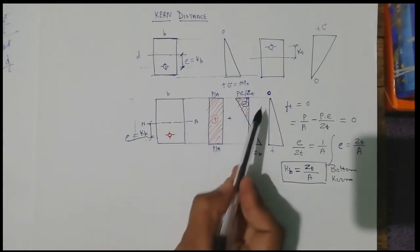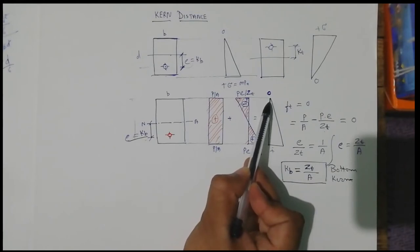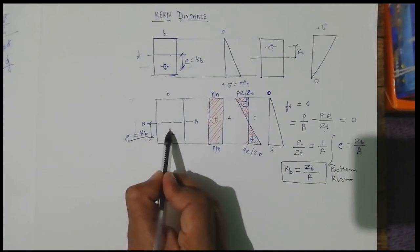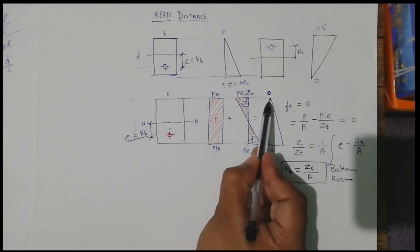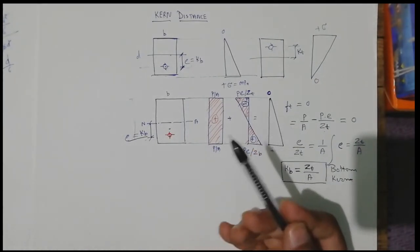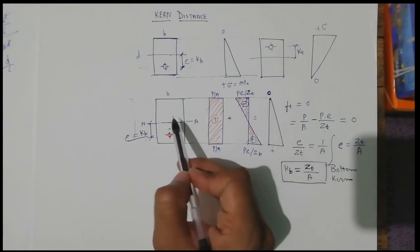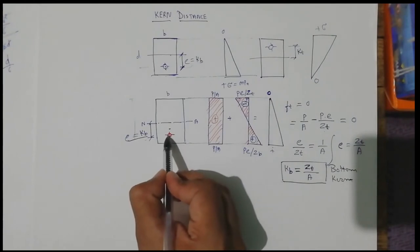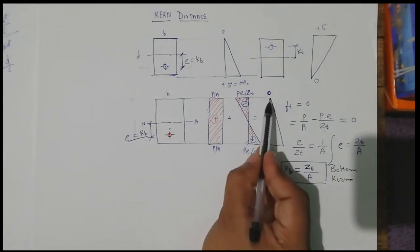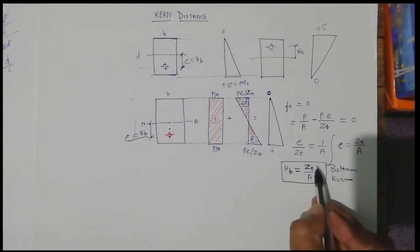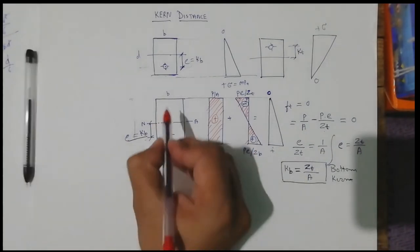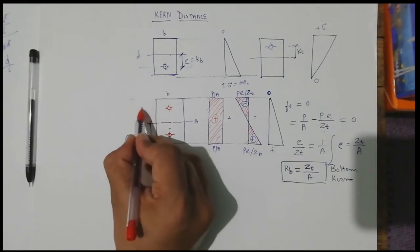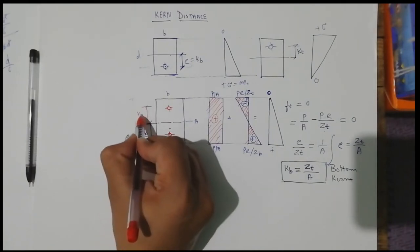If we provide a prestress within KB, it ensures there will be no tensile stress at the top. There may be some compressive stress, but that is not an issue since concrete is stronger in compression. We can ensure there will be no tensile stress at the top fiber. Similarly, for a tendon provided above the neutral axis at KT, we derive the kern top distance.